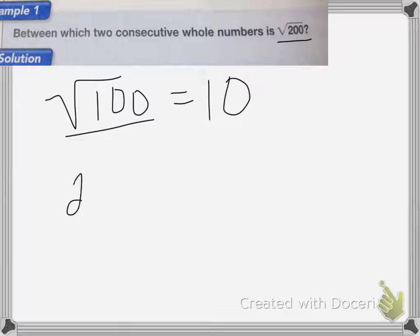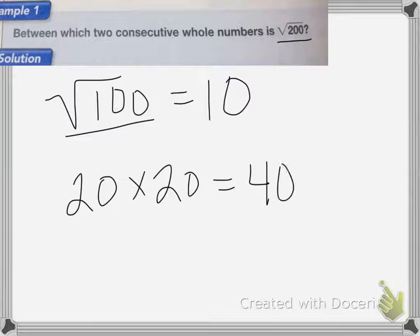So if we do 20 times 20, well that's equal to 400 and it's too large. So then I need to try a number in between 10 and 20.